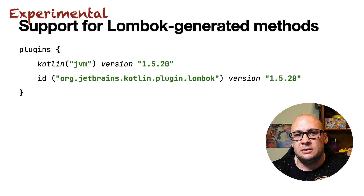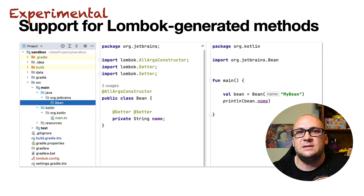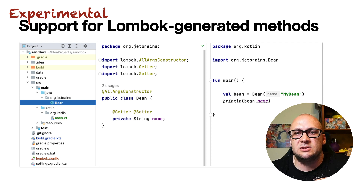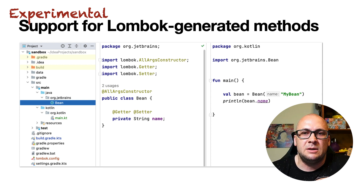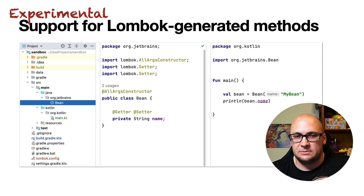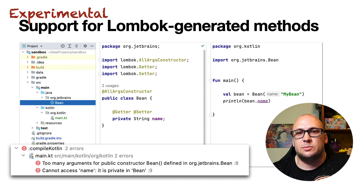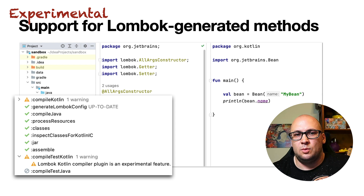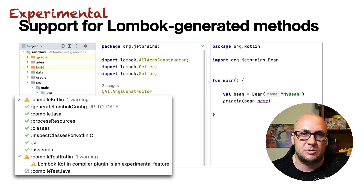To enable the plugin, you have to declare it in your Gradle build file with the same version as the Kotlin plugin. Let's see an example of a situation where you would need this plugin. Here is a bean class that uses the annotations provided by Lombok. During compilation, getters and setters will be generated for the field name, and also the constructor that takes the name as an argument. Then on the right, we have code written in Kotlin that consumes this Java class with Lombok annotations. Previously, if you tried compiling such a module, you would see a compilation error. With the new Lombok compiler plugin, the compilation will succeed, but you will see a warning that you are using an experimental feature.